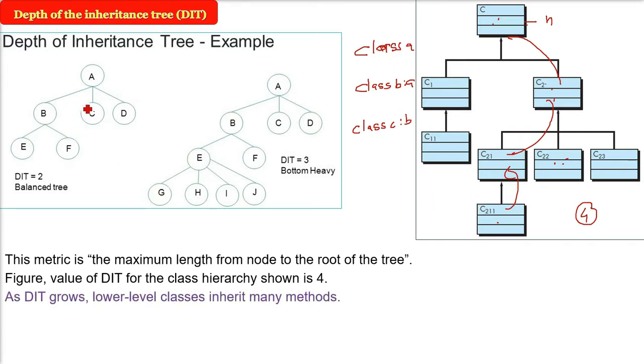And when this depth of inheritance increases and when it decreases, that directly represents the complexity of object-oriented design. As DIT will grow, the lower level classes are bound to inherit many methods. From C, C2, C21, C21 will inherit. Now DIT I am showing because here you see the bottom is quite heavy. DIT2 the balanced tree if you see here. So we want the balanced kind of tree because we want that the inheritance should be up to a limit, should be controllable.